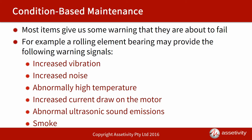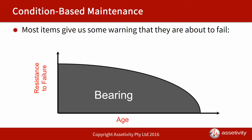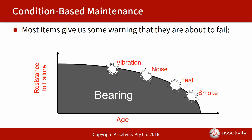What we can do is plot those warnings on a curve. Taking that bearing from when it's running as new until it actually fails or suffers a functional failure, we might find that vibration gives us a certain amount of warning before the bearing fails, that noise gives us less warning, that heat gives us less again, and smoke gives us very little warning at all — from when we see smoke until the bearing actually seizes.